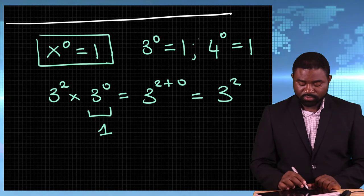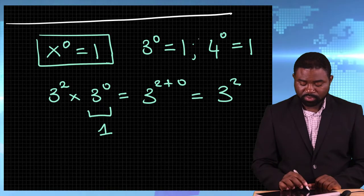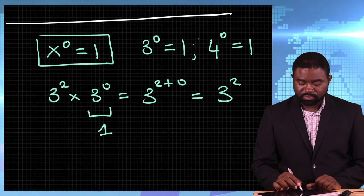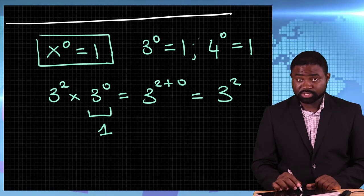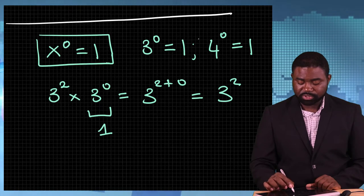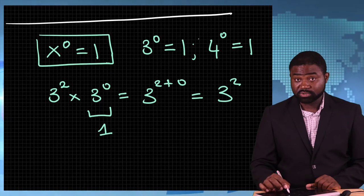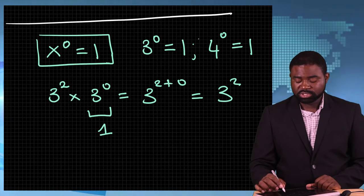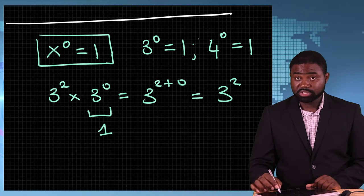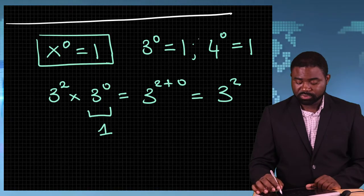So, 3 raised to the power 2 times 3 raised to the power 0 is equal to 3 raised to the power 2 plus 0, which is equal to 3 raised to the power 2.